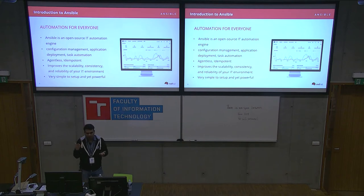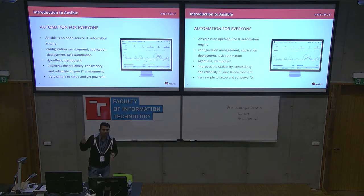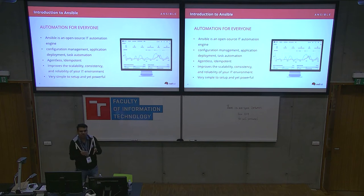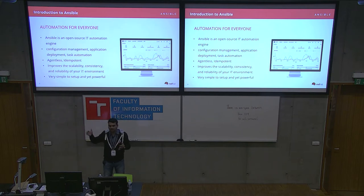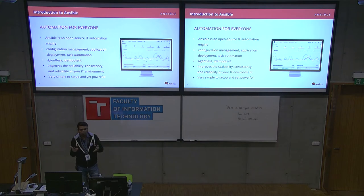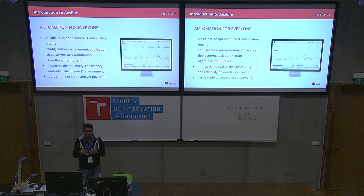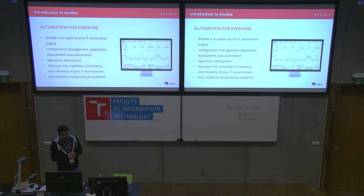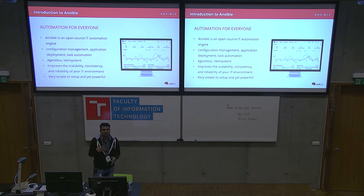This also removes the problem of stale data. If an agent is providing old data from a particular machine, operations can go wrong — for example, if there's a drift in time and date between the agent and the controller node. But with real-time data, you ask the managed node directly, it returns the current time, and you perform operations on that fact. You cannot go wrong. This helps a lot when you have a bunch of operations deploying across machines.